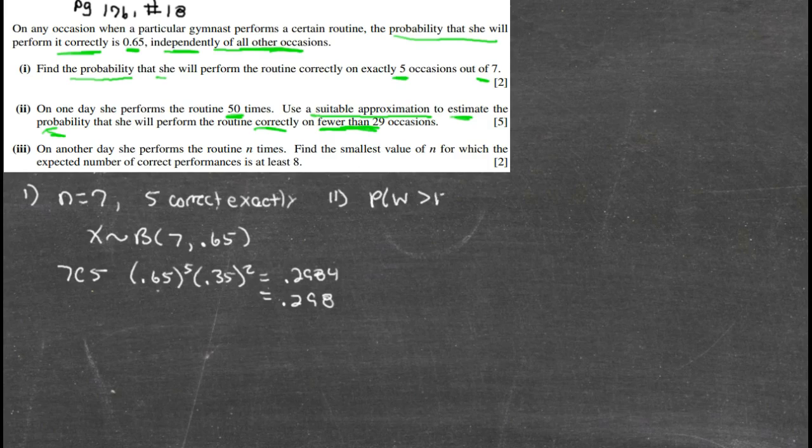All right, we've got a number of trials n = 50, and it's a normal distribution. n = 50, probability of success is 0.65. It does meet the criteria if I multiply them together, it's going to be bigger than five.